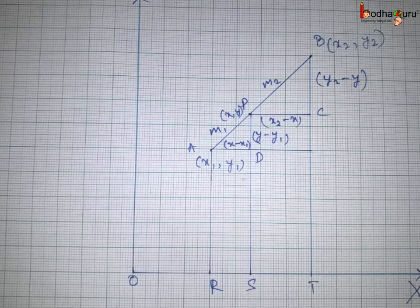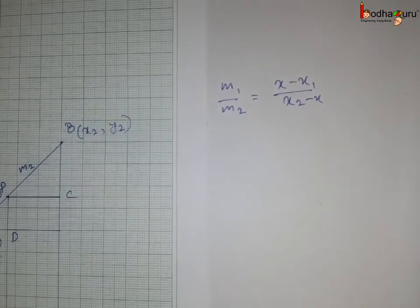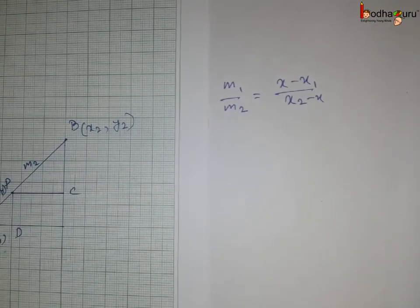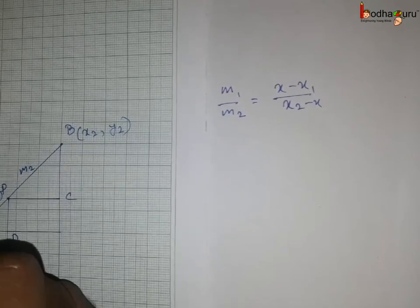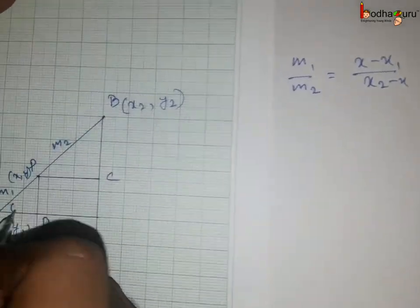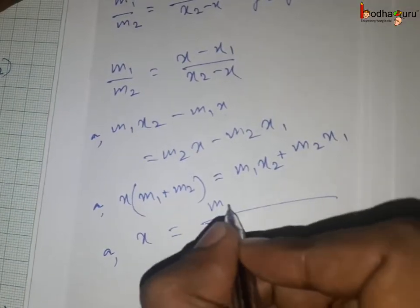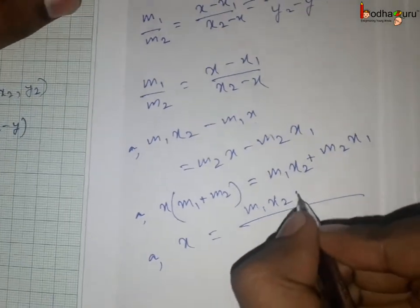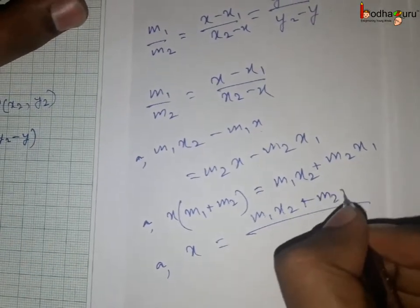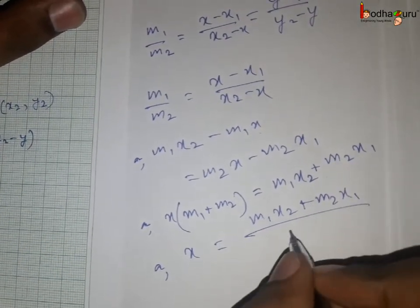So AD by PC equal to (x minus x1) by (x2 minus x) which is equal to M1 by M2. If we solve it we get x as (M2·x1 plus M1·x2) by (M1 plus M2).